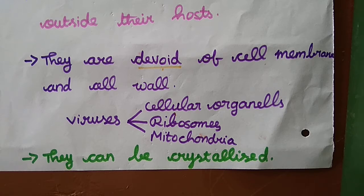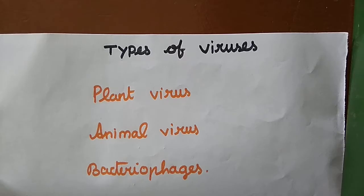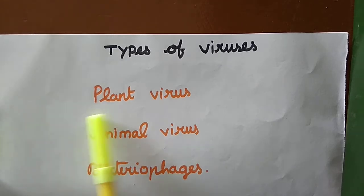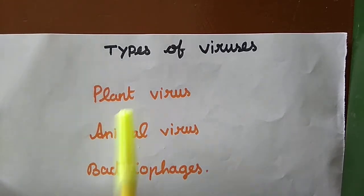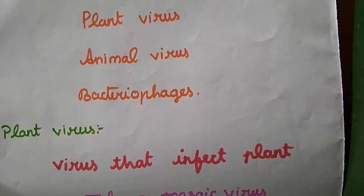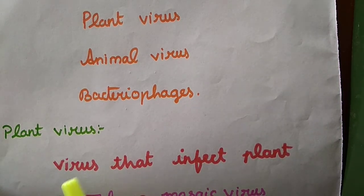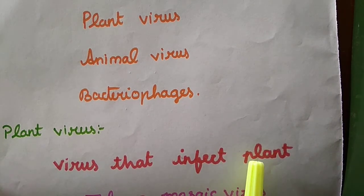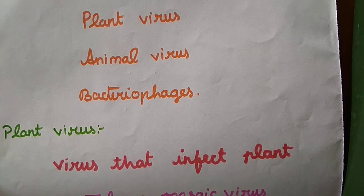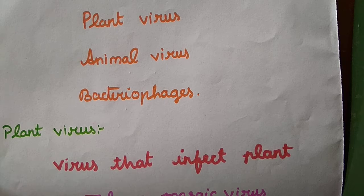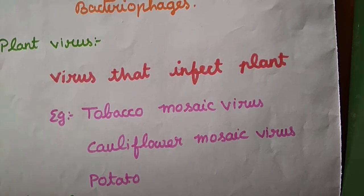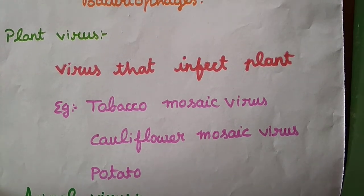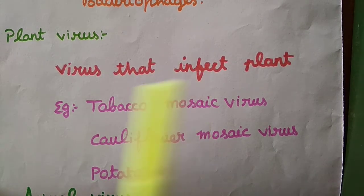Next, there are three types of viruses: plant virus, animal virus, and bacteriophage. Plant viruses are viruses that infect the plant. Some viruses attach to the plant body. Examples include tobacco mosaic virus, cauliflower virus, and potato virus.